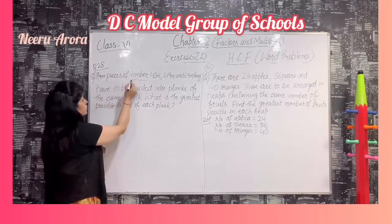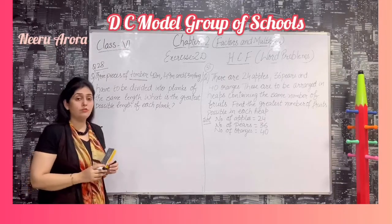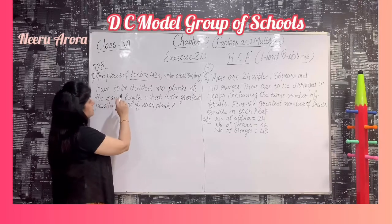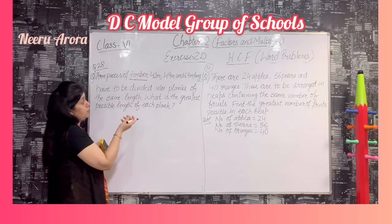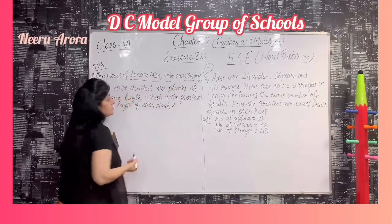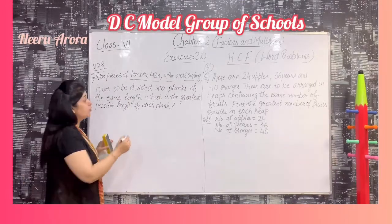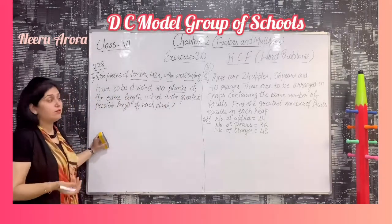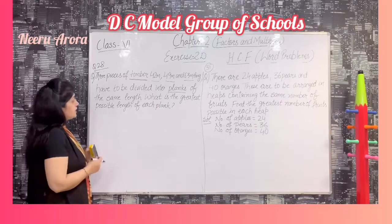So three pieces of timber — what is timber? A huge piece of wood. So three pieces of huge wood: 42 meters, 49 meters, and 63 meters have to be divided into planks, that is, smaller pieces of the same length.